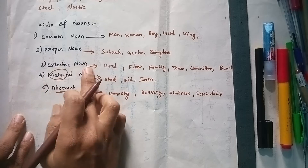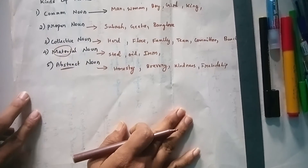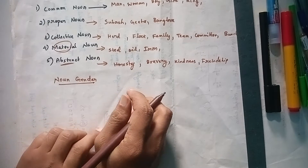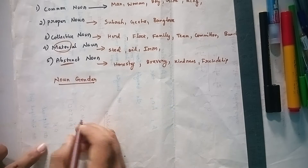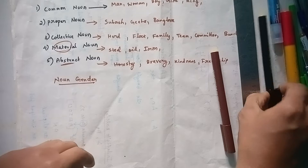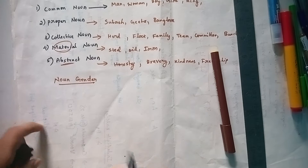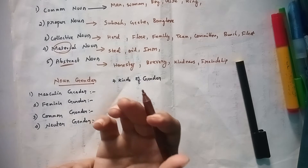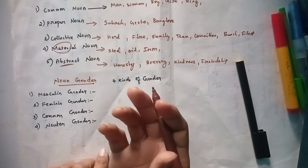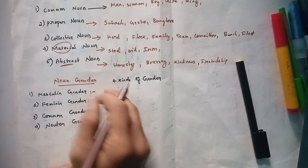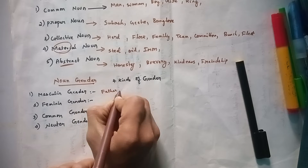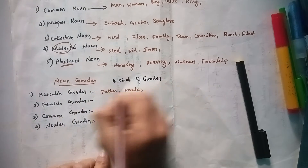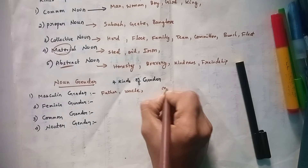These are the five kinds of noun: common noun, proper noun, collective noun, material noun, and abstract noun. Next we discuss about noun gender. There are four types of noun gender. Masculine gender means the noun denotes all male characters — for example: father, uncle, brother, boys.